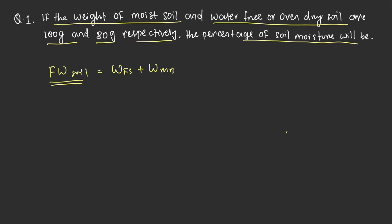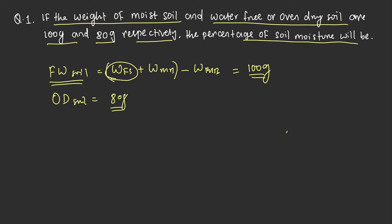After you put the soil in the moisture box and place it on a weighing balance, you deduct the weight of the moisture box to find the weight of fresh soil, which is given here as 100 grams. After oven drying for 24 to 48 hours to a constant weight, the oven dry weight of soil is 80 grams. The moisture percentage formula is: weight of fresh soil minus weight of oven dry soil, divided by weight of oven dry soil, multiplied by 100.